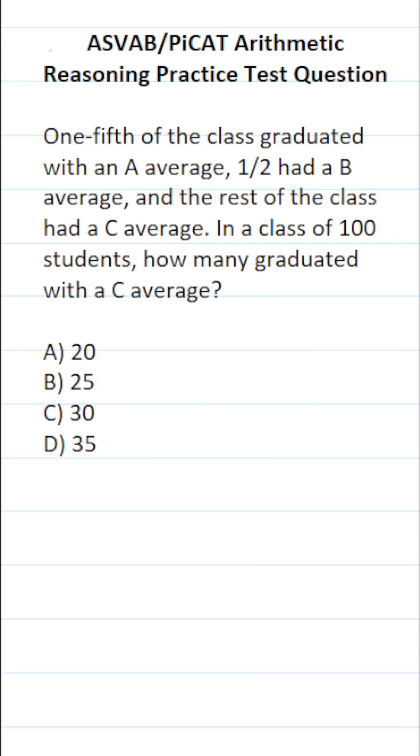This arithmetic reasoning practice test question for the ASVAB and PiCAT says one-fifth of the class graduated with an A average, one-half had a B average, and the rest of the class had a C average. In a class of 100 students, how many graduated with a C average?